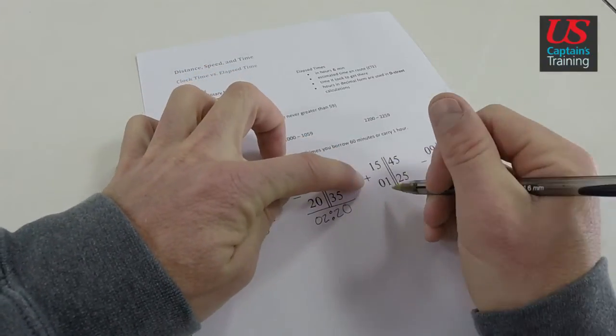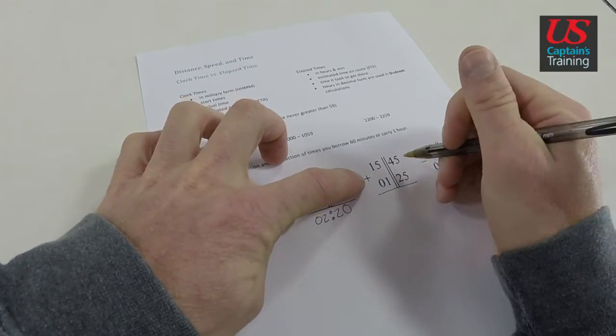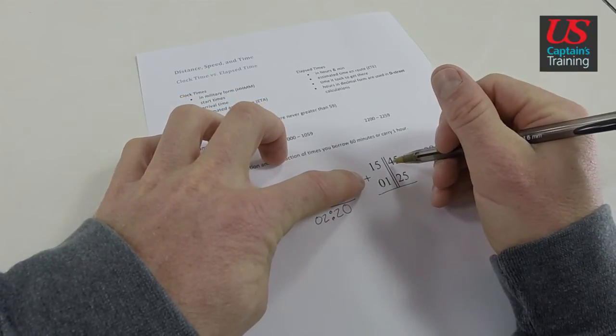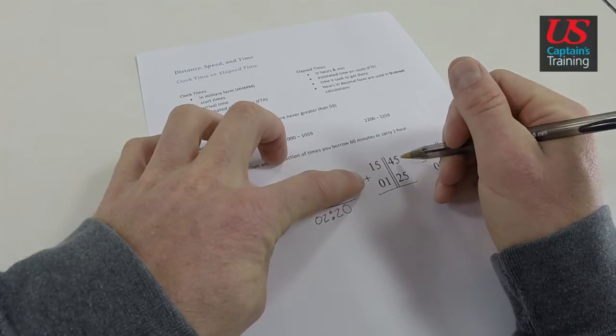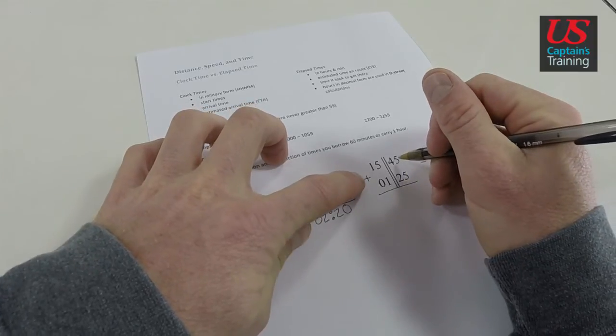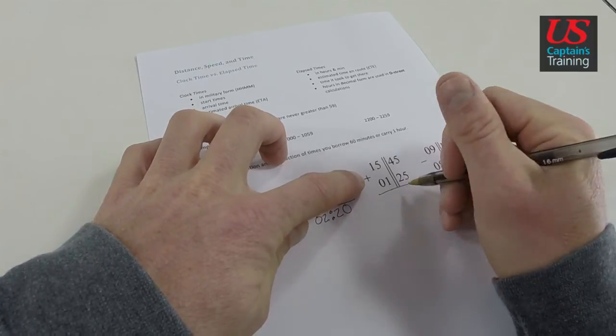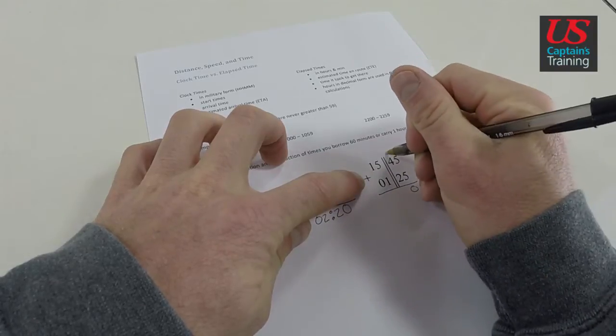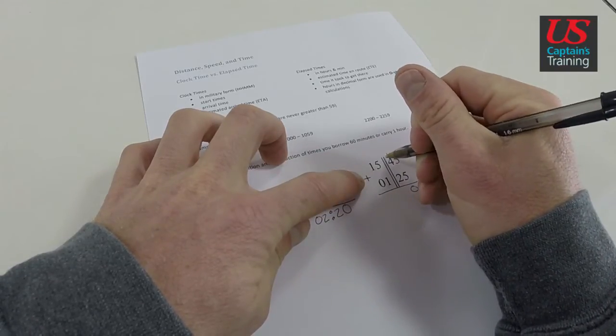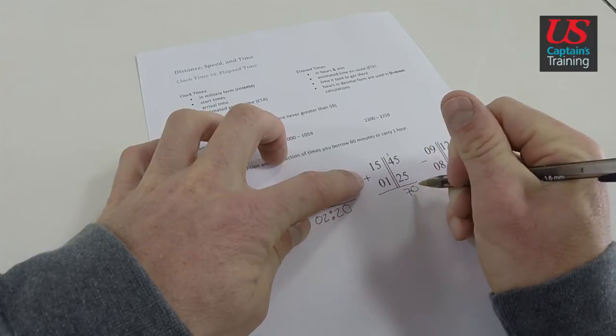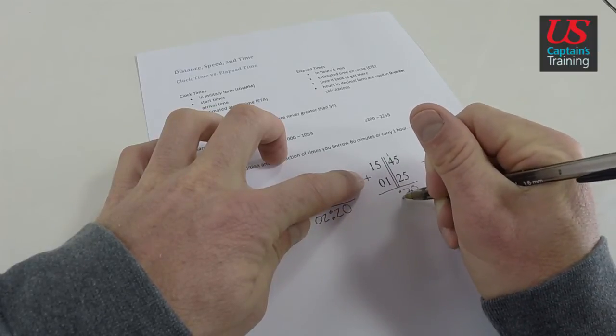This is an addition problem. We need to add 45 minutes plus 25 minutes. And watch what happens here. 5 plus 5 is 10. 0, 1. 1 plus 4 is 5. 6, 7. Okay, we have 70 minutes. That looks strange to us.